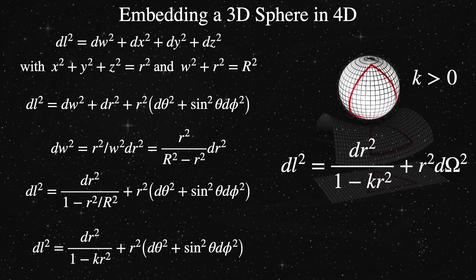However, our embedding dimension is just a tool and not real. If we take the differential of our restriction condition and square it, we get dw-squared equals dr-squared times r over w-squared.